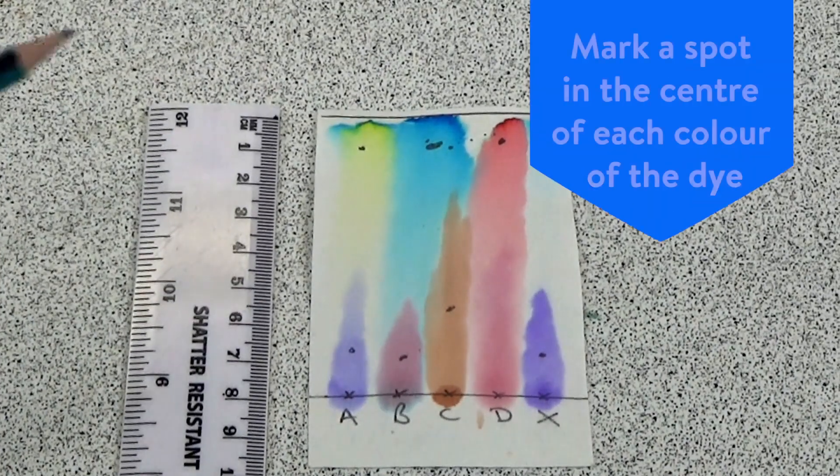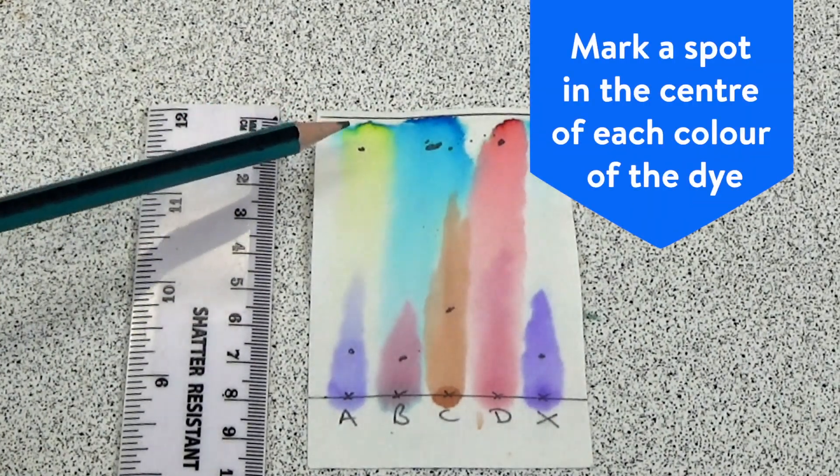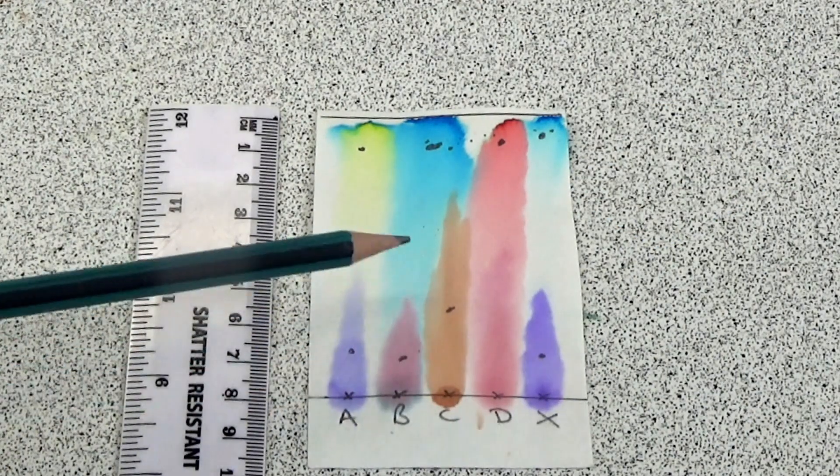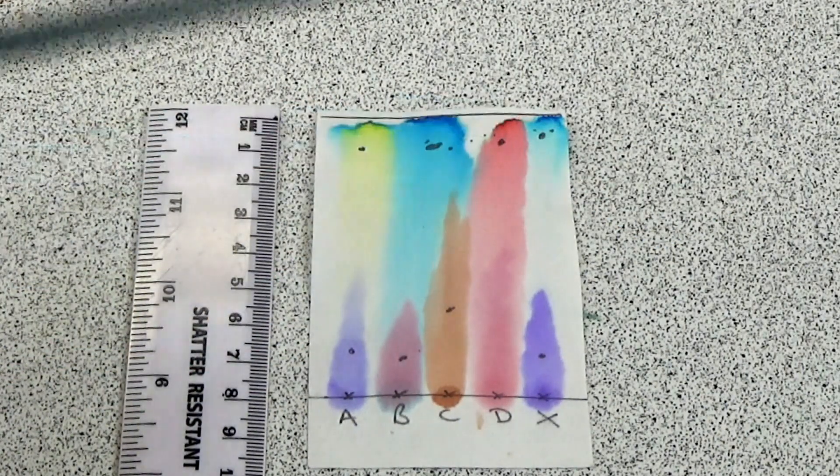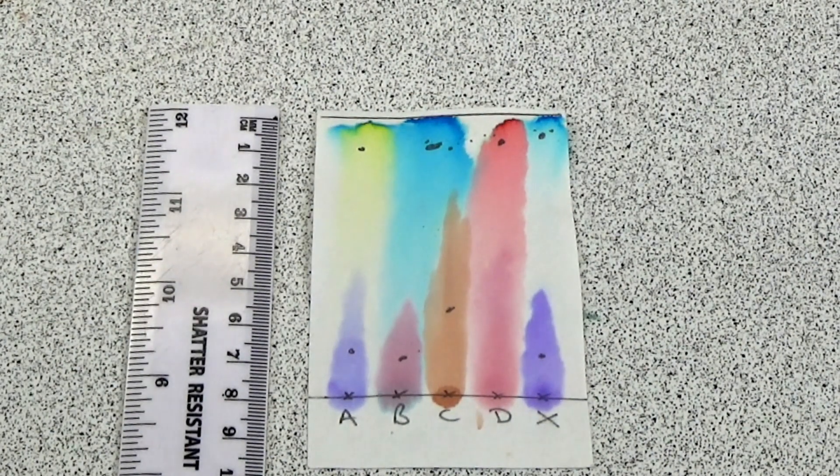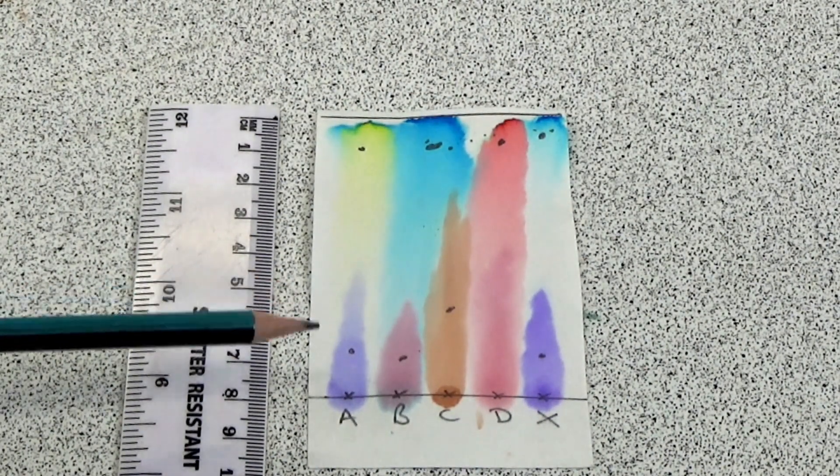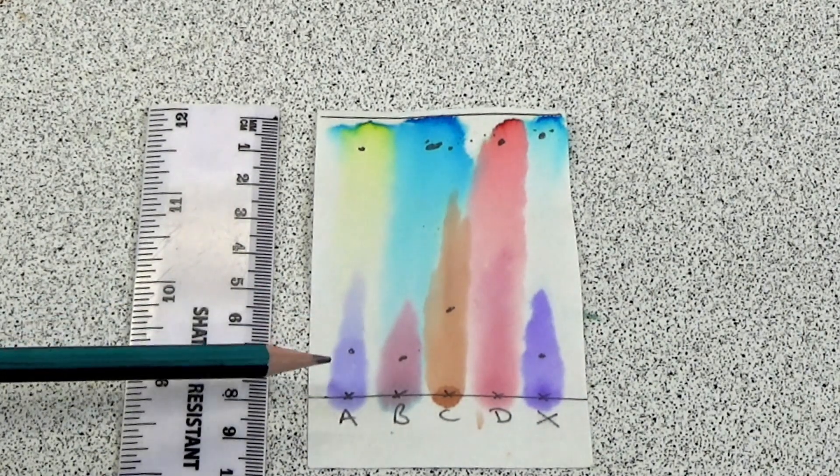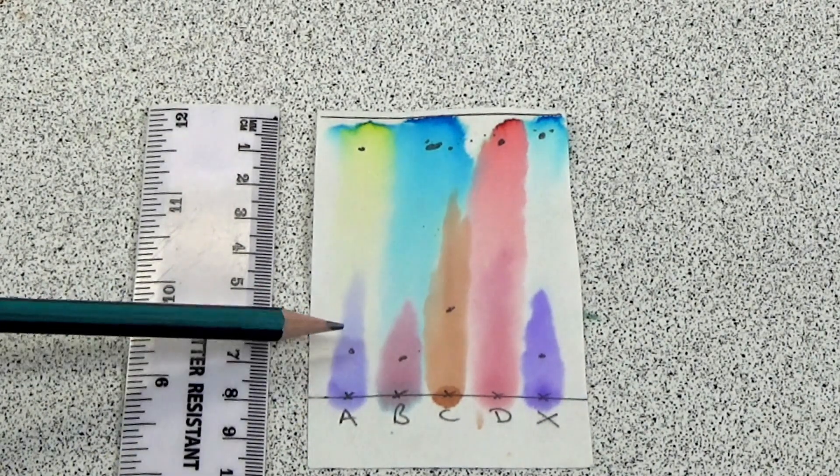The students then mark a spot with a pencil in the middle of each colour of the dye. So you can see here I've done it for the purples, for the brown and the blues for example and then using the ruler they measure in millimetres how far each dye has travelled by measuring from the start line to the spot.